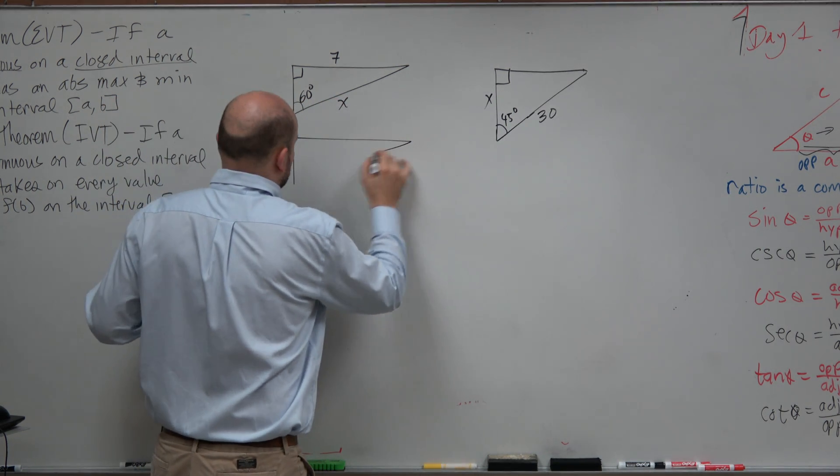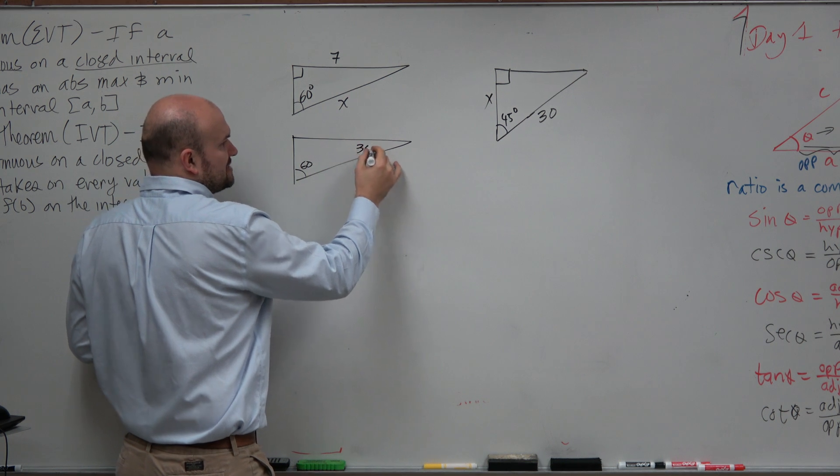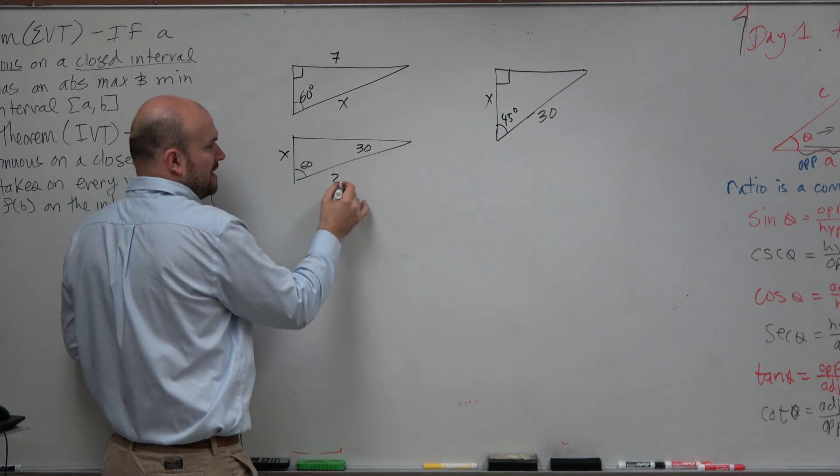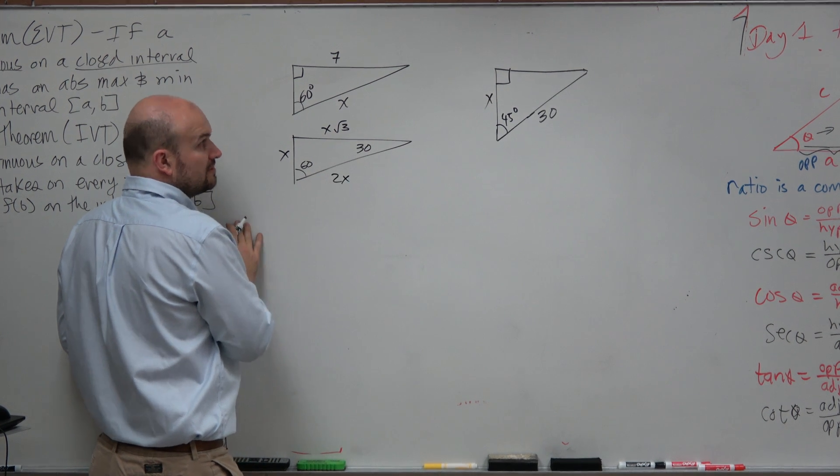if this side is 60 and that's 30, then I know short leg, hypotenuse, x square root of 3, right?